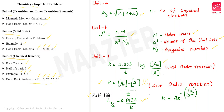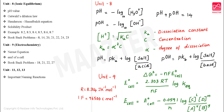Next, in this unit there is an Arrhenius equation related problem. The formula is K equal to A × e^(−Ea/RT). Also, pH plus pOH equal to 14.